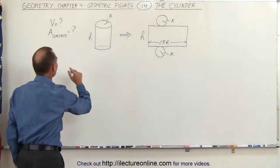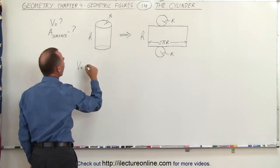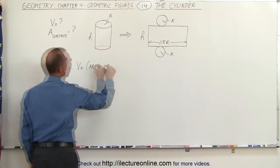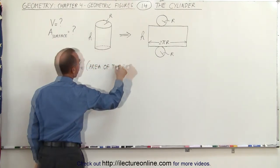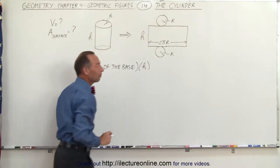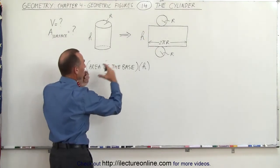To find the volume of the cylinder what we need to do is take the area of the base and then multiply that times the height. And that will give us the volume. That's typically the formula we use for any object that has volume.